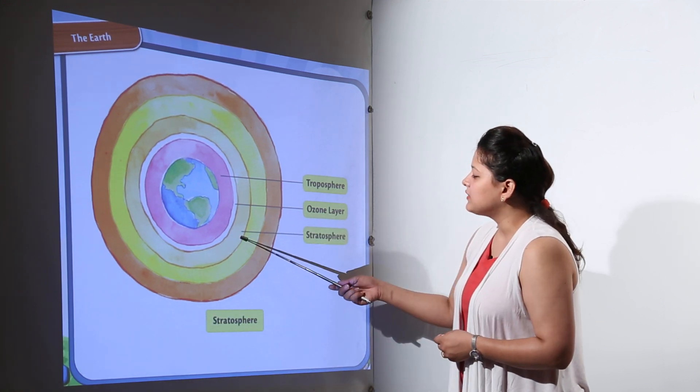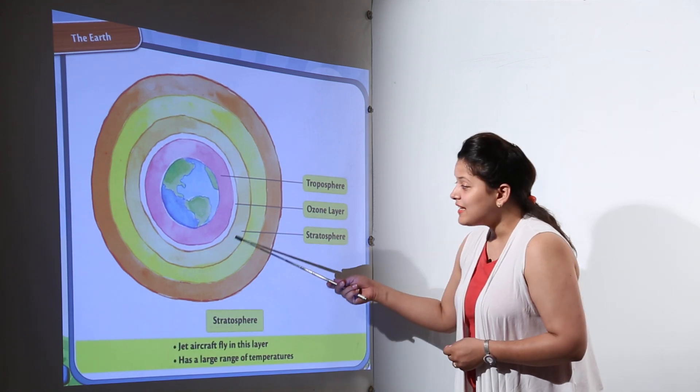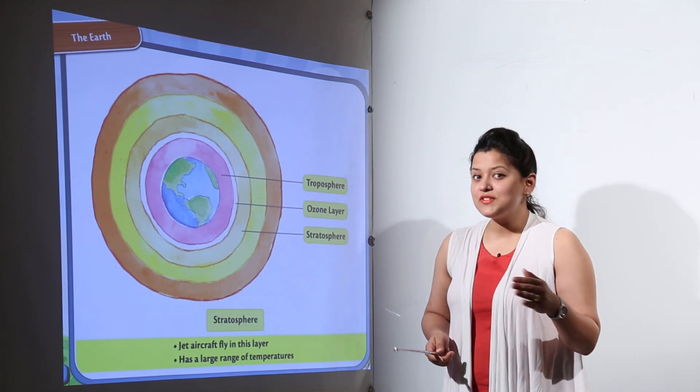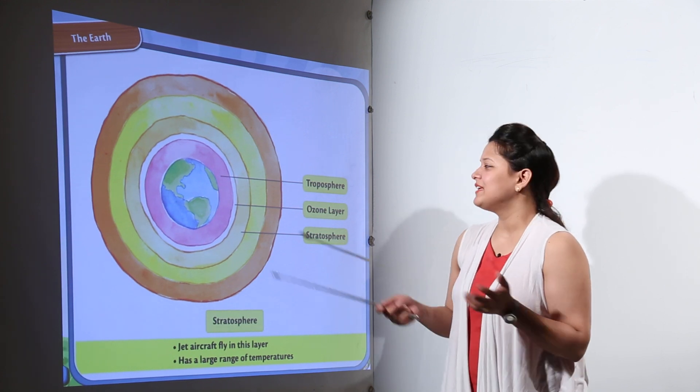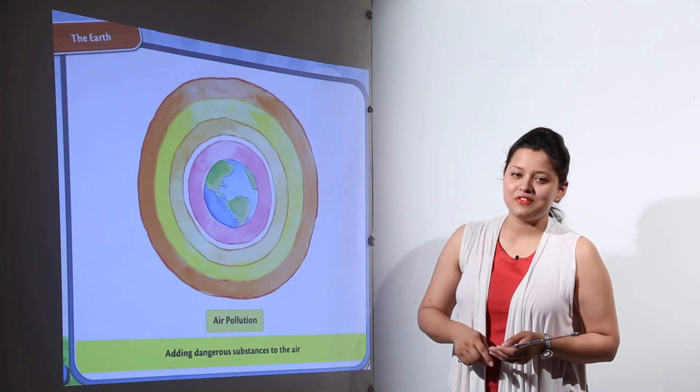The next layer after that is the stratosphere. It is the layer in which the jet aircrafts in which we all sit and go. This is the layer in which the aircrafts even fly.